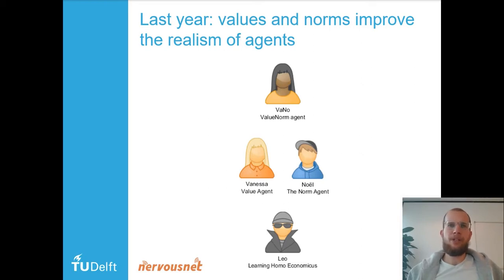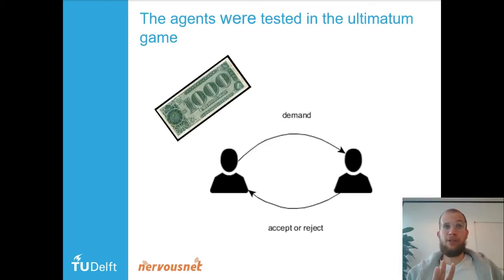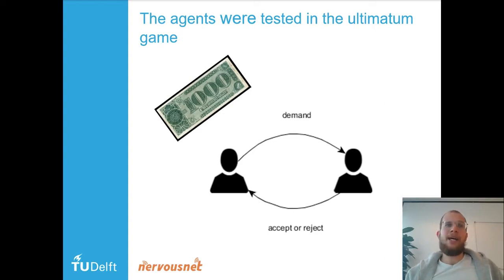So how do we do that? We tested them in a specific scenario called the automation game. The automation game goes as follows: there are two players, represented by two black figures.